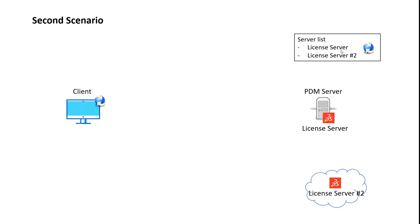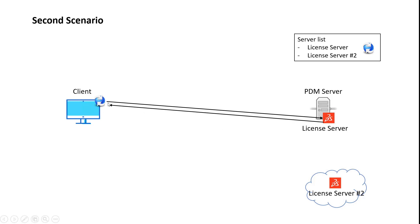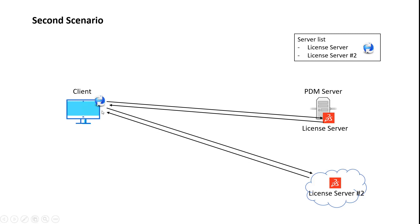Both license servers at this point are aggregating the total amount of licenses, and on the client side it's completely transparent. The client will try to check out the license from the first license server, and it will also be able to connect to license server number two and check out the license directly — just as if that license server were in the same location as the PDM server. That's the second scenario.